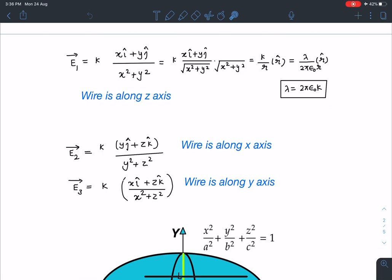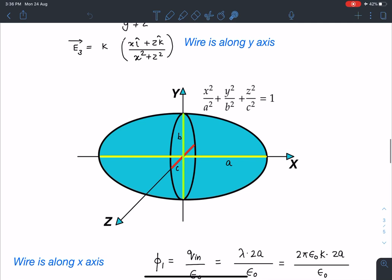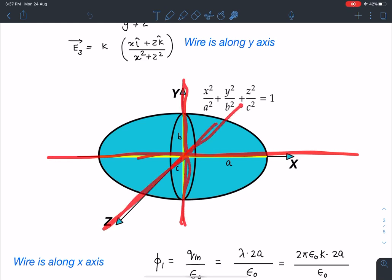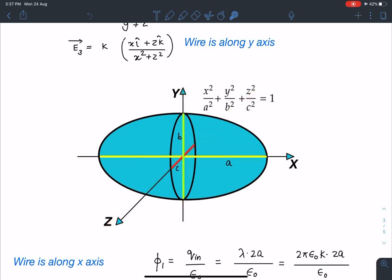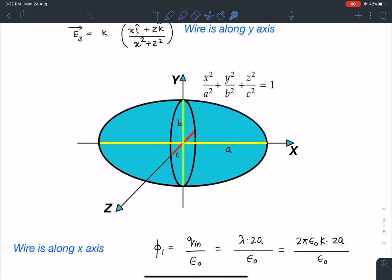Similarly this part will behave as if wire is placed along x axis. Similarly this field will behave like as if wire is placed along y axis and first one is wire along z axis. So overall this ellipsoid will behave as if there are three line charges along x axis, along y axis and along z axis. Three infinite wires are kept that are going to create the given field and we have to calculate flux due to that field.